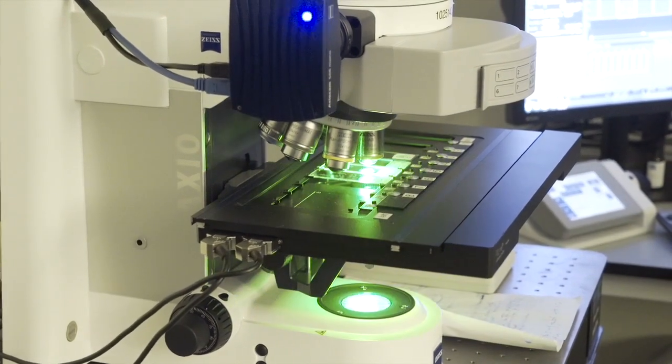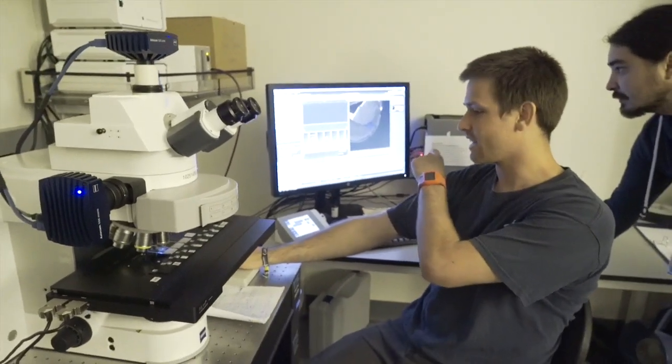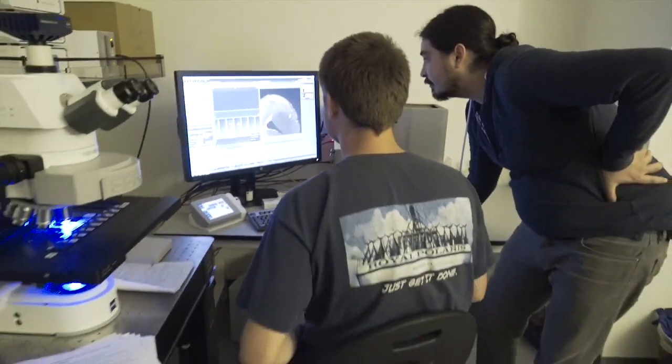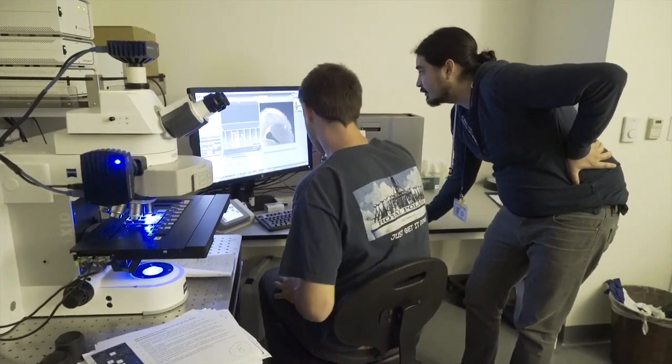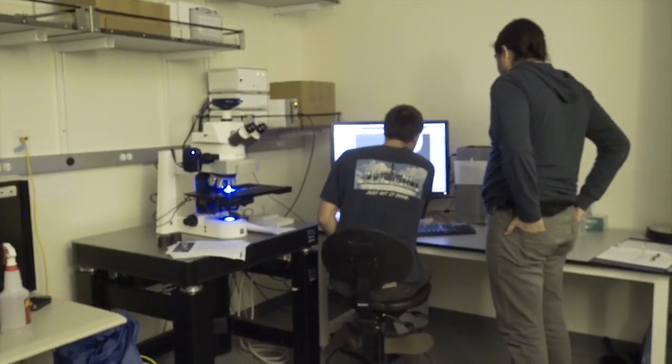We take images on these really nice expensive microscopes ranging from a hundred thousand dollars to a couple hundred thousand. We take high quality images and look at neurons and how they project their axons and dendrites. From there we can analyze multiple neurons and quantify those with different statistical analysis to get a feel for how spaced out the neurons are and where they project their axons.